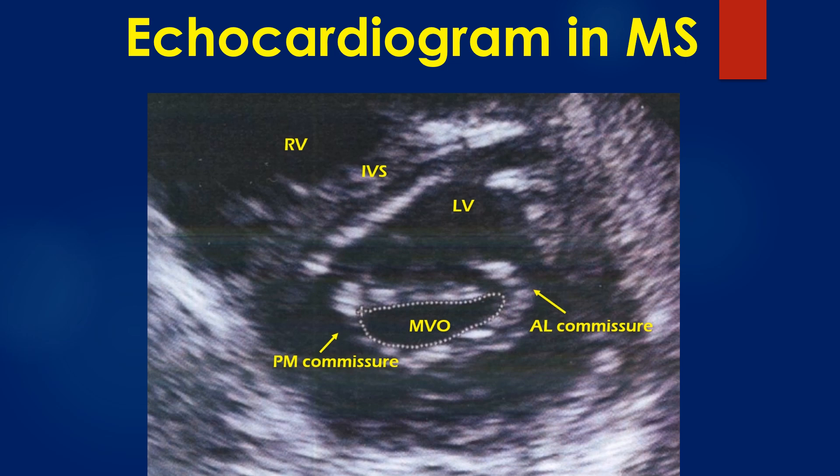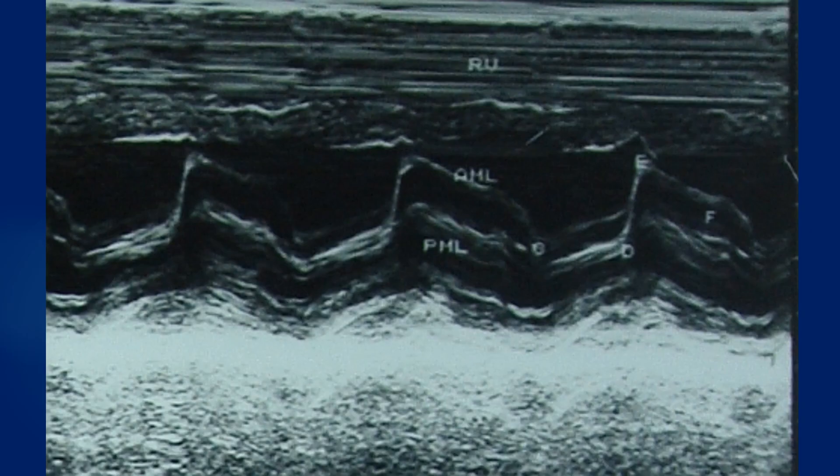Ideally, the smallest full circle should be taken to planimeter the valve area. If it is not a full circle, the subvalvar pathology may be measured as the valve orifice. If the smallest full circle is not taken, it will be the valve proximal to the severest stenosis, i.e., the valve belly. The M-mode echocardiogram shows the paradoxical anterior motion of the posterior mitral leaflet in diastole with reduced separation of the leaflets.